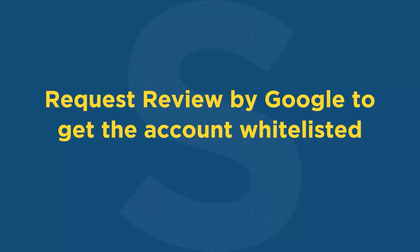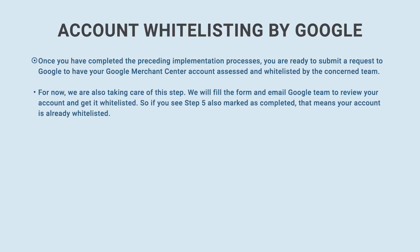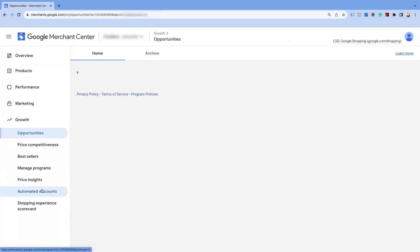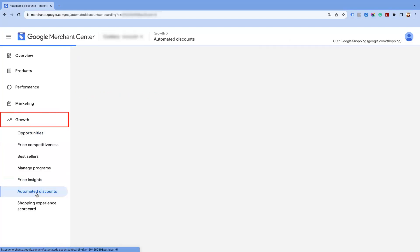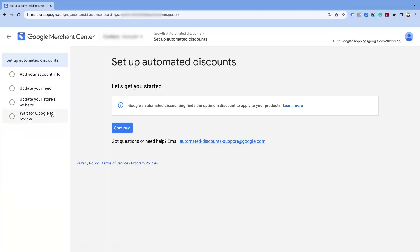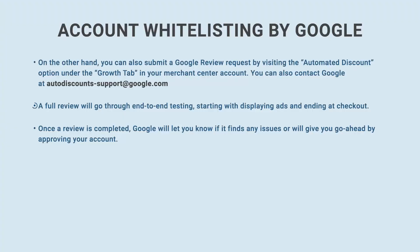Chapter 7: Request review by Google to get the account whitelisted. Once you have completed the preceding implementation processes, you are ready to submit a request to Google to have your Google Merchant Center account assessed and whitelisted. We are also taking care of this step — we will fill the form and email the Google team to review your account and get it whitelisted. If Step 5 is marked as completed, that means your account is already whitelisted. You can also submit a Google review request by visiting the Automated Discount option under the Growth tab in your Merchant Center account, or contact Google at autodiscountsupport@google.com. A full review will go through end-to-end testing, starting with displaying ads and ending at checkout. Once complete, Google will notify you of any issues or give you the go-ahead by approving your account.